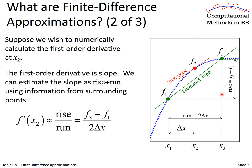The slope is rise over run. The rise is F3 minus F1, and the run is the span between X1 and X3, which is 2 times delta X, where delta X is the increment from X1 to X2. So already we have a finite difference approximation which calculates a first-order derivative at position X2.